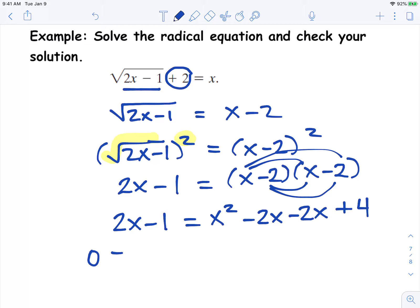Now we're going to write it in standard form. So we're going to move all of the terms to the right side. I'm going to subtract 2x from both sides and add a 1 to both sides. Now I'm going to combine like terms. Negative 2x minus 2x minus 2x is negative 6x. 4 plus 1 is 5.